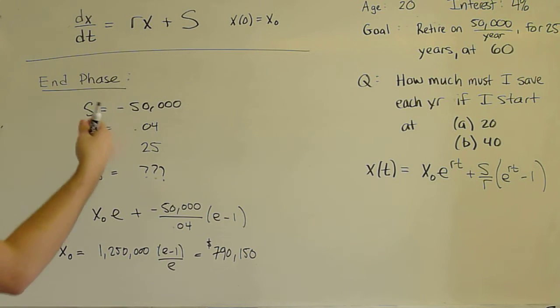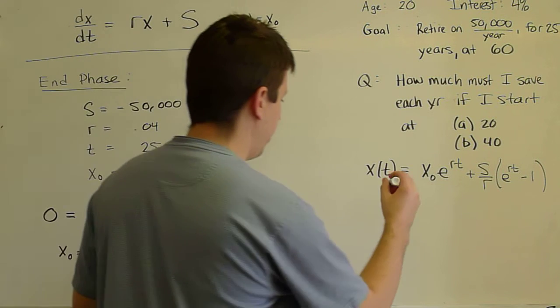And we get 790,150. So if we assume these things to last 25 years, I need 790,150 at age 60. So part of our problem is done. Let's write down that number.